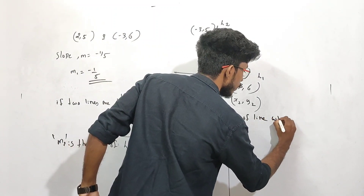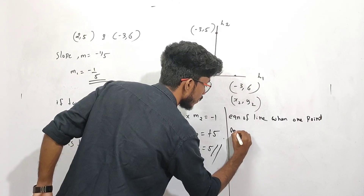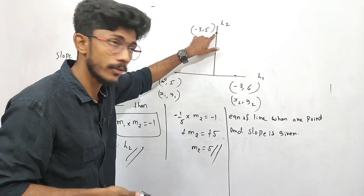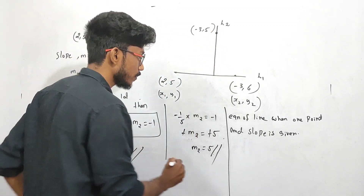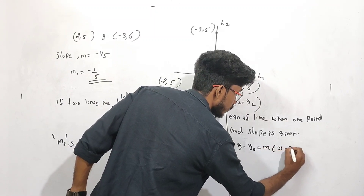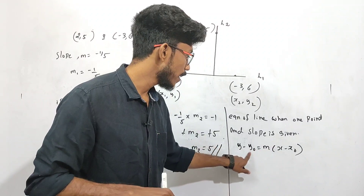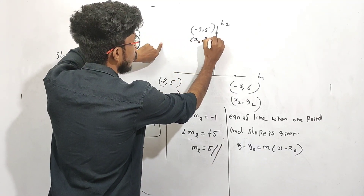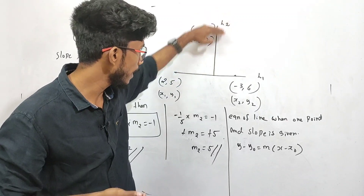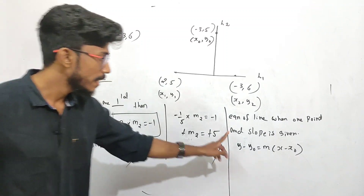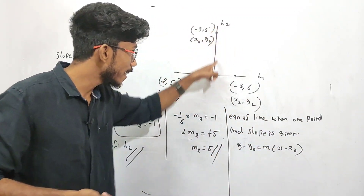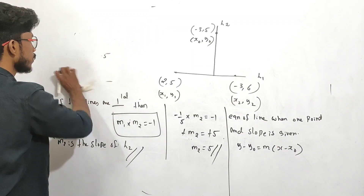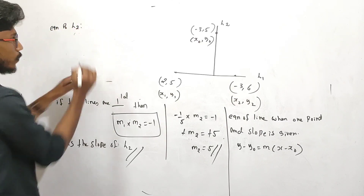The equation of a line when one point and slope are given uses the point-slope formula: y - y₀ = m(x - x₀), where (x₀, y₀) is the given point and m is the slope. Here the given point is (-3, 5) and M2 = 5 is the slope. This is the formula we will apply to find the equation of L2.